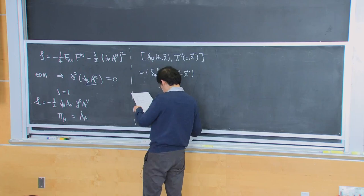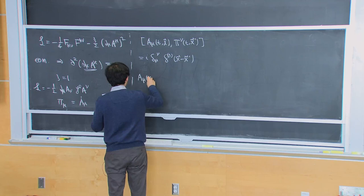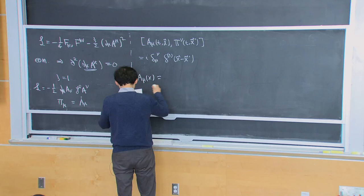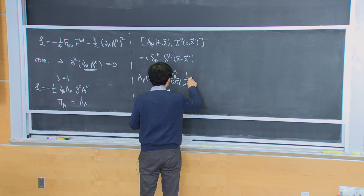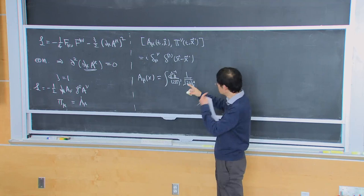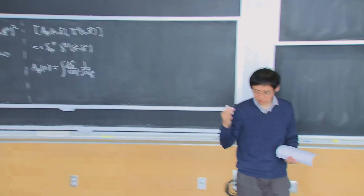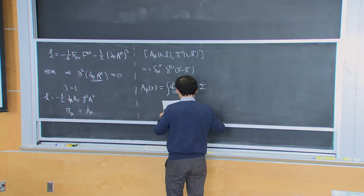We can also straightforwardly write down the operator expansion for A_mu — we have four of them. Instead of writing them as four massless scalars, as we did for the Coulomb gauge case, we introduce a polarization vector. So there are four possible polarizations corresponding to the four components.